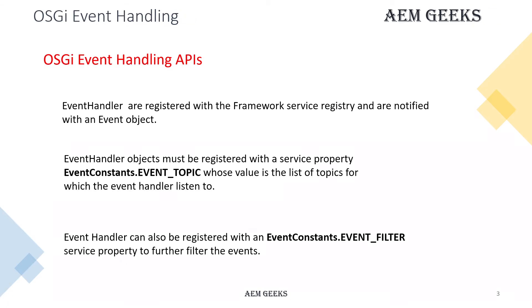Event handlers are registered with the framework and provided with an event object. This event object contains all the required information you need to perform your task. You can define what events the handler listens to using a property called event.topic, which you add in the @Component annotation. The value will be the topic — what kind of event you want to listen to. event.filter will filter the behavior of your event handler, such as under which path you want to listen.